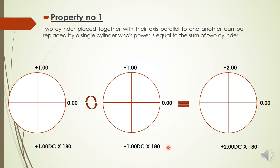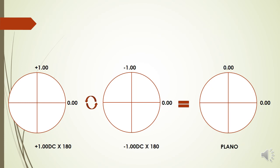This is taken as a last option if you don't have any other options. It is also useful for testing a cylinder power not in range — for example, if you want to test a plus 8 cylinder but your trial set only goes up to plus 6, you can use a plus 6 and a plus 2, or a plus 4 and plus 4, kept parallel together, and the total power will be the addition of both cylinders. That is property number one.